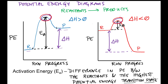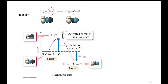Very early on in general chemistry, we made the relationship that if a certain molecule, atom, or ion is high potential energy, that means it's very unstable — and that's why it's high potential energy. So these transition states that occur at the highest potential energy position on a potential energy diagram are really unstable. During a reaction, there's always going to be a transition state that is very unstable, i.e., high potential energy, for some reason.